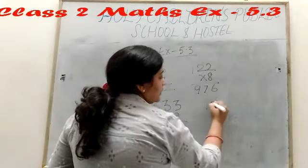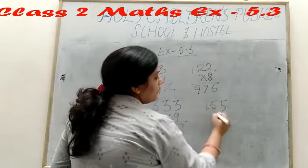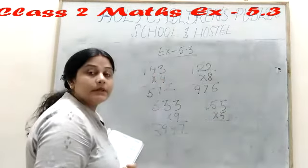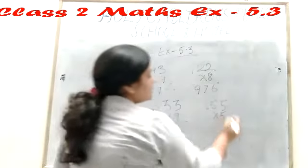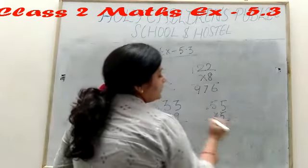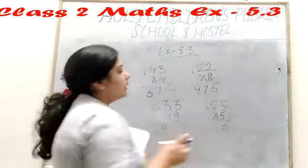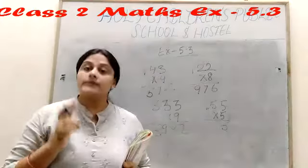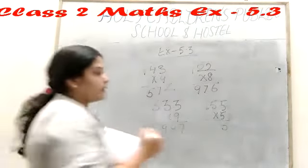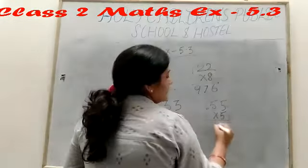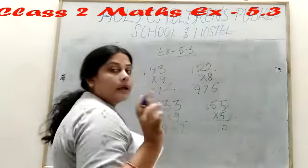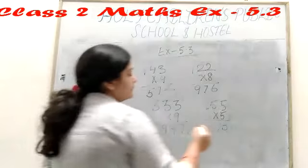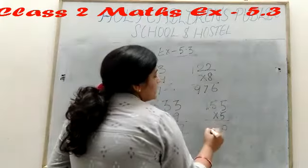155 into 5. So 5 5 is 25. We can write here 5, 2 carry. Again, 5 into 5 is 25 plus carry 2, 27. We can write here 7, 2 carry. 1 5, 5 plus 2. 775.